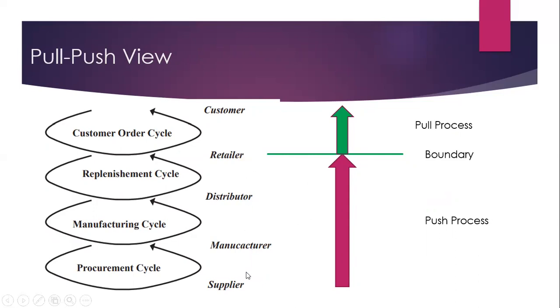Below the Retailer, usually the Suppliers and Manufacturers coordinate, produce, and distribute the Products. They push the Product in the Supply Chain. This is the Push Process. This is the Pull and Push View of Supply Chain.